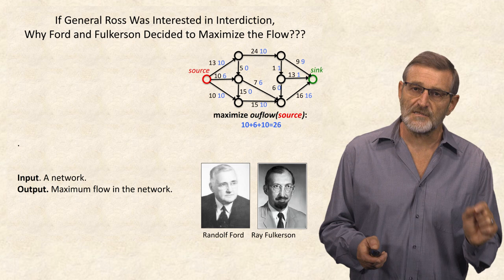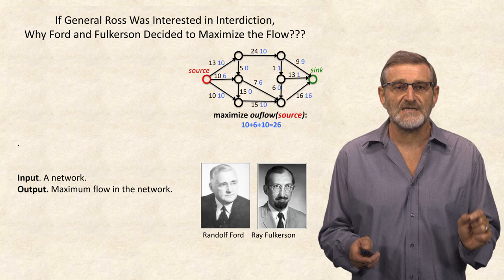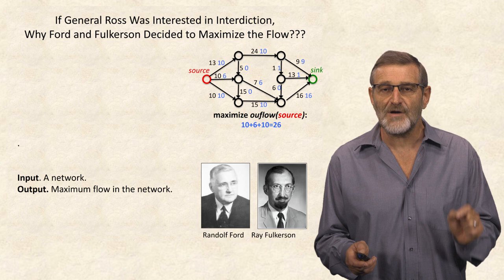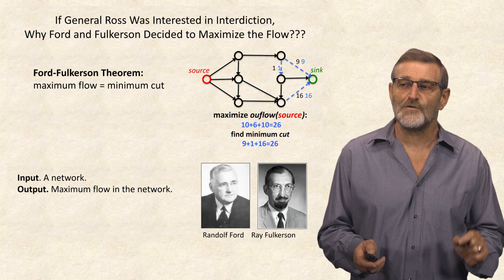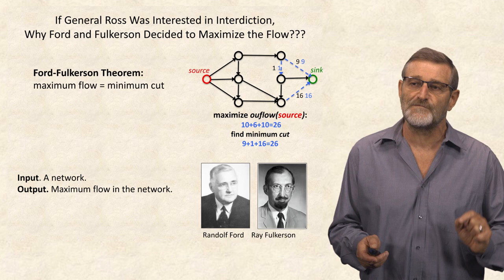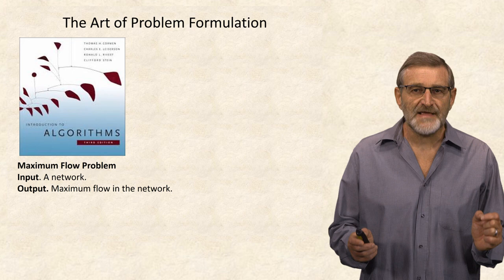Please note that General Ross was interested in interdiction. Why did Ford and Falkerson decide to maximize the flow instead of minimizing the number of railway segments to bomb? Because it turns out that the interdiction problem and the maximum flow problem are intimately connected. Solving maximum flow is equivalent to finding the minimum cut, which is shown by dashed edges in this slide.